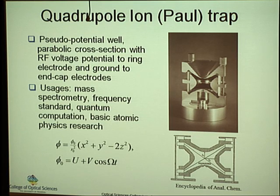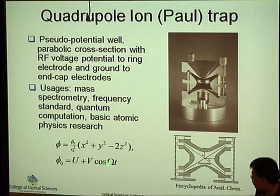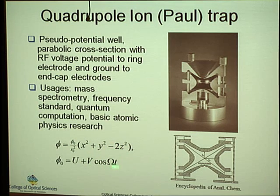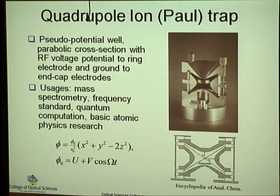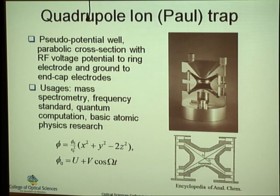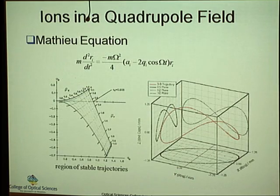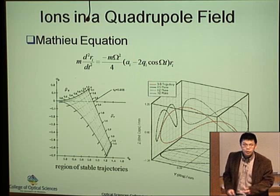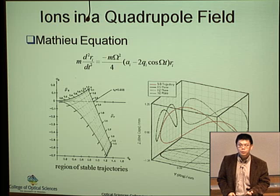So what is an ion trap? An ion trap consists of a set of three electrodes: a top electrode, a bottom electrode, and a ring electrode. Inside, the ion trap has a quadrupole potential, which is a function of position and frequency. The typical ion trap has the size of a bottle and uses electrodes shaped as hyperbolas. Inside this hyperbolic electrode is a quadrupole potential, and if you put a particle inside it, you can describe its trajectory using the Mathieu equations, which have stable and unstable solutions.